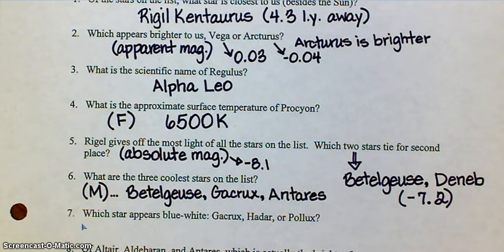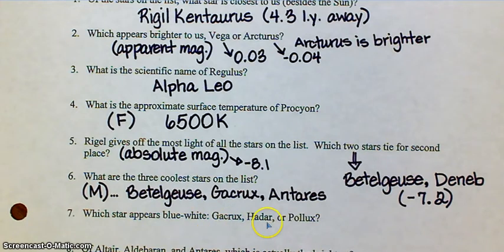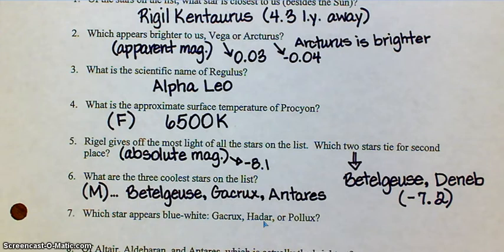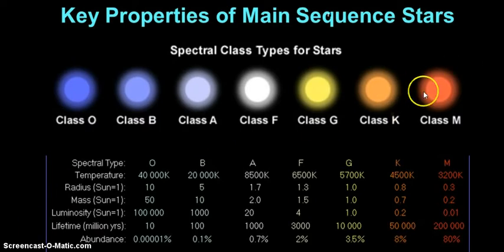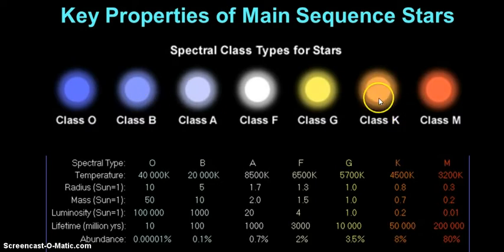Number seven: which stars appear blue-white — Gacrux, Hadar, or Pollux? Color, temperature, and spectral class are all linked. Gacrux we already know from number six — this is a type M. Hadar: look at your chart, go over, and it is a type B spectral class. Pollux, which is a little bit further down in the list, is a type K. So going back to the chart: Gacrux is an M, meaning it would be a red star; Hadar is a B, which means it would be kind of blue — you could probably get away with calling that blue-white; and Pollux is orange. So you've got a red, an orange, and a blue-white — we're going to go with Hadar.